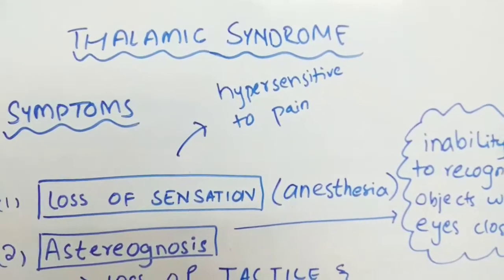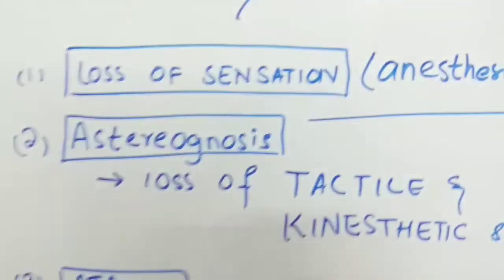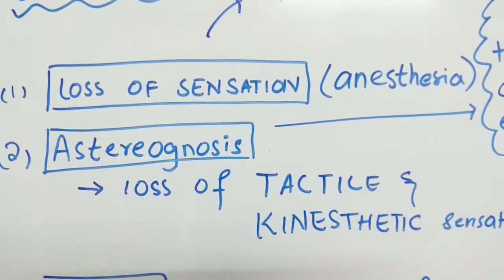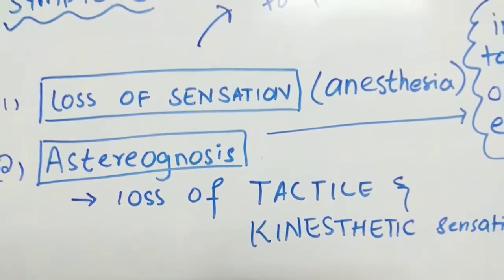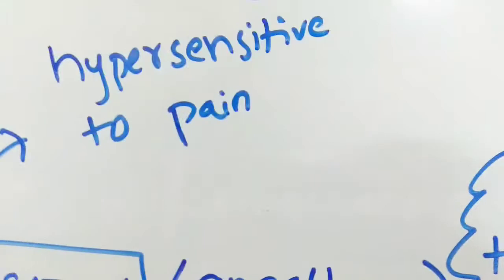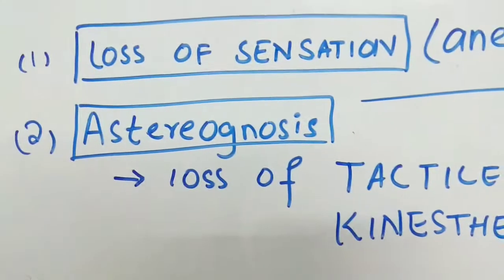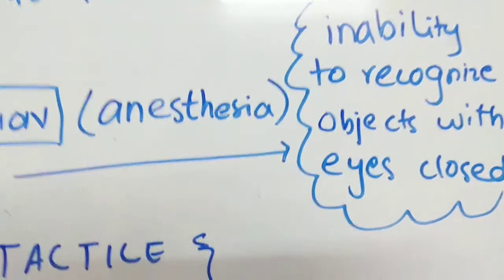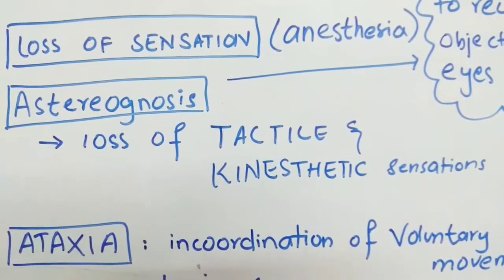Now we are going to discuss the symptoms of thalamic syndrome. First of all, there is loss of sensation, also known as anesthesia. As we know, the thalamus is the relay center for sensation, so a lesion of the thalamus will lead to loss of sensation. But there will also be hypersensitivity to pain — the body will show hypersensitivity to pain. The next symptom is astereognosis, which is the inability to recognize objects with eyes closed, due to loss of tactile and kinesthetic sensations.